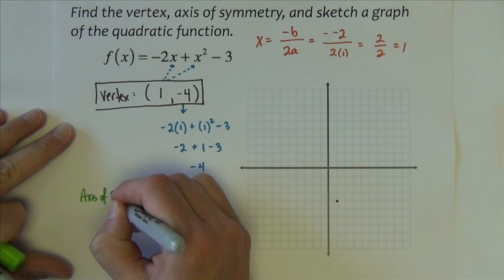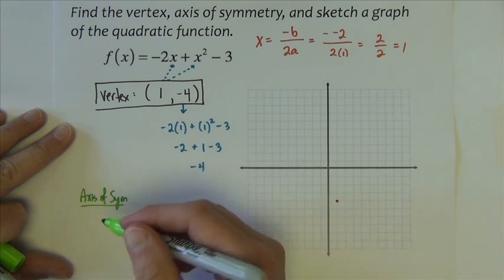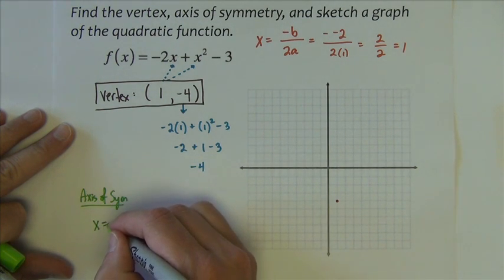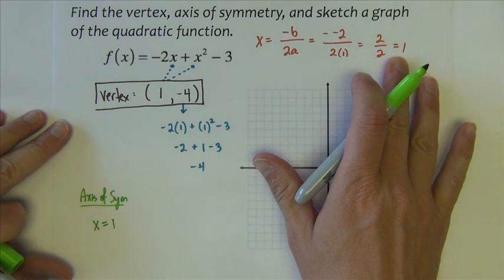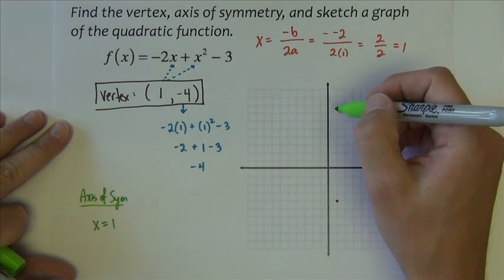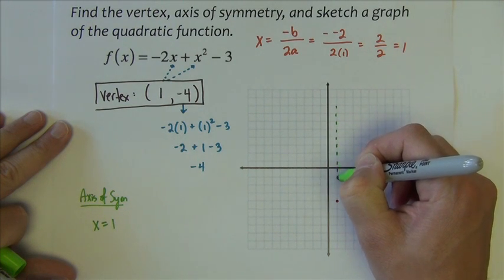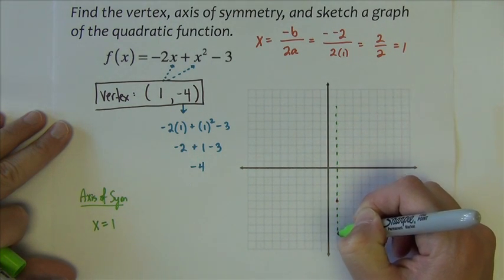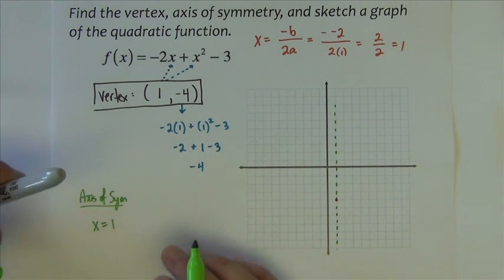It also asks us to find the axis of symmetry. Now the line of symmetry, or the axis of symmetry, just so happens that it goes through the vertex. So when I found the X value of the vertex, I actually found the axis of symmetry as well - X equals 1. Just kind of put an imaginary line right in there for our line of symmetry.